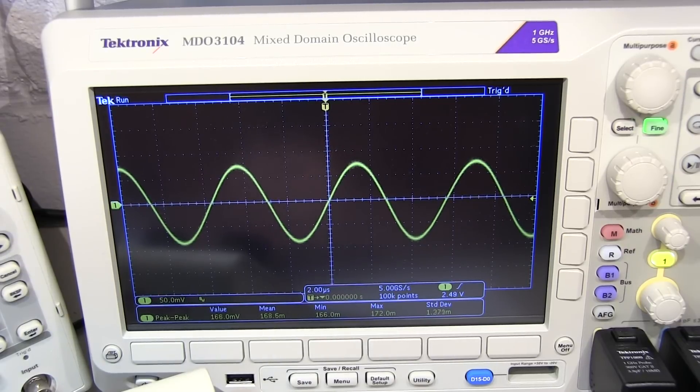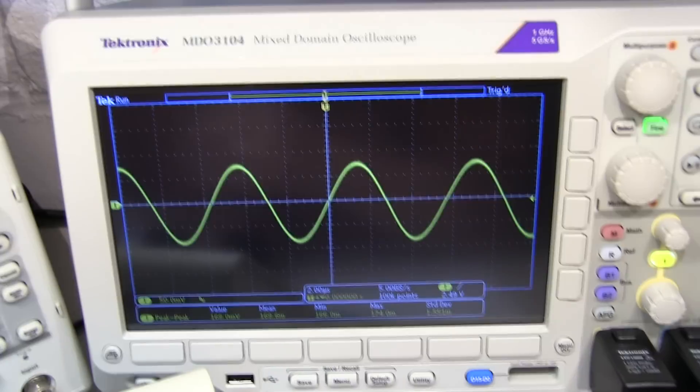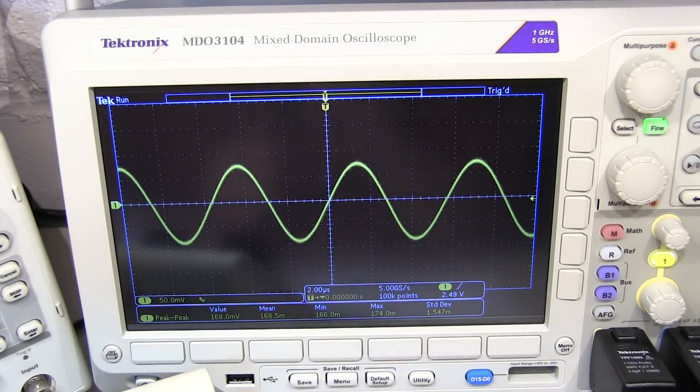That's why oftentimes when you see unity gain bandwidth defined in an op amp, it's defined effectively for quote unquote small signals, because that's the only way you're going to be able to get around the slew rate limit for large signals.